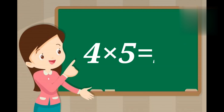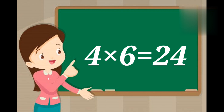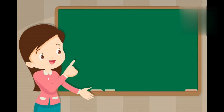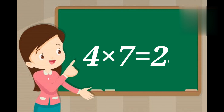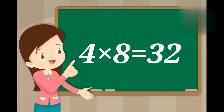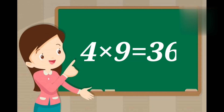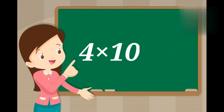Four fives are twenty. Four sixes are twenty-four. Four sevens are twenty-eight. Four eights are thirty-two. Four nines are thirty-six. Four tens are forty.